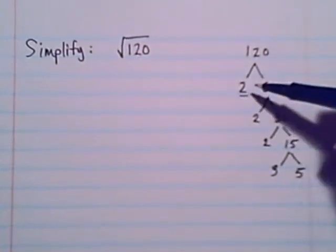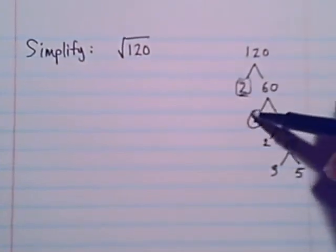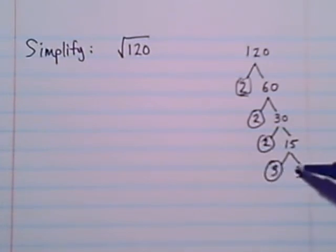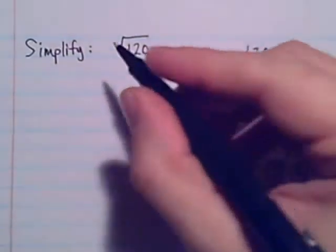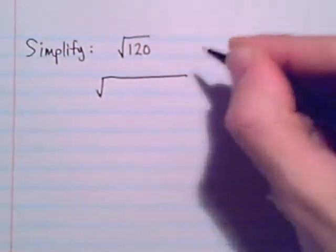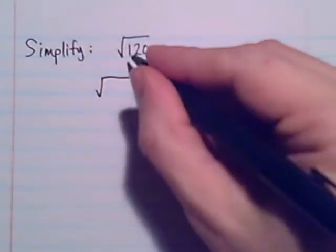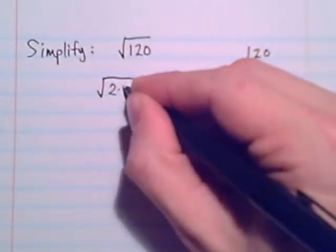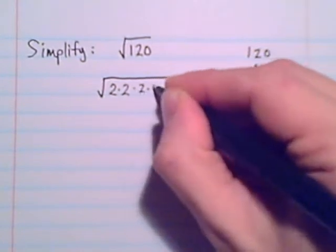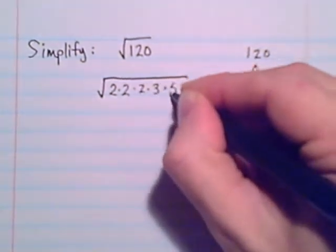So there are my prime factors of 120: 2, 2, 2, 3, and 5. So I'm going to rewrite this radical using the prime factors in place of the 120, times 2 times 2 times 2 times 3 times 5.